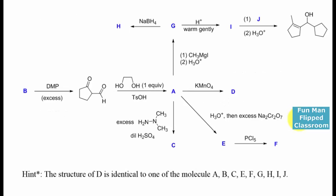So let's see the problem here. You're given the numbers, some molecules, reagents. You're supposed to decipher what they are. There's one hint here - it says the structure of D is identical to one of the molecules from A, B, C, E, F, G, H, I, J.